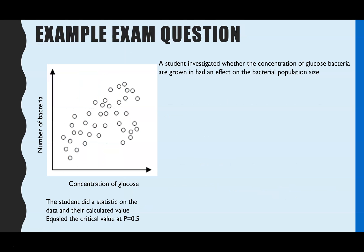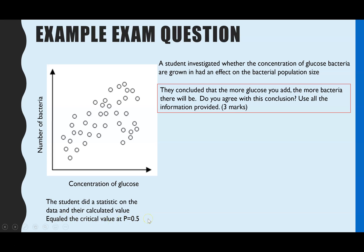So one more example just to show you how this often comes up, in particular on paper 3. So we've got an example exam question. A student is investigating whether the concentration of glucose bacteria are grown in has an effect on the bacteria population size. And the data we've got then, we can see we've got a scatter graph here, where we've got concentration of glucose against the number of bacteria. And the student did a statistic on their data, and their calculated value equaled the critical value at p equals 0.05.